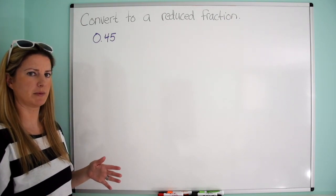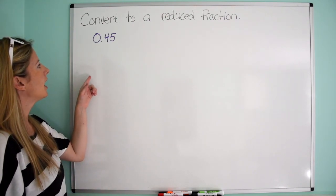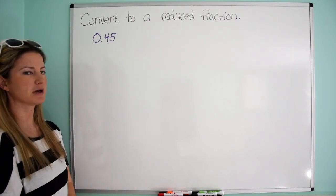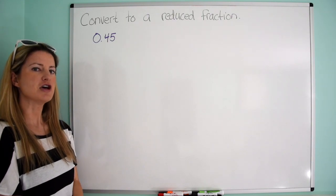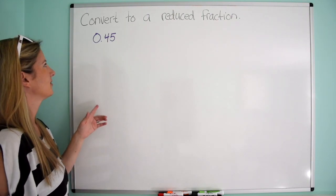Now, when you were really young, probably in elementary school, you were probably taught that that is 45 hundredths, right? So that can kind of give away what we should do.